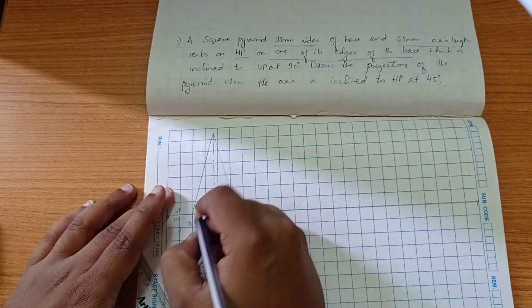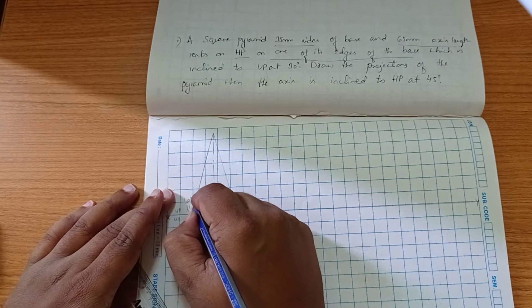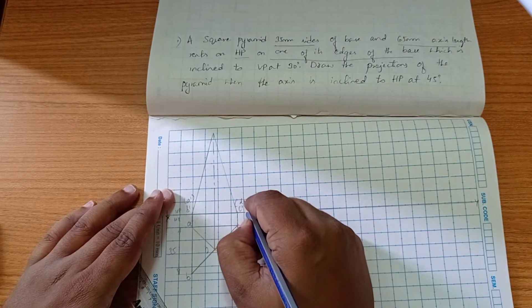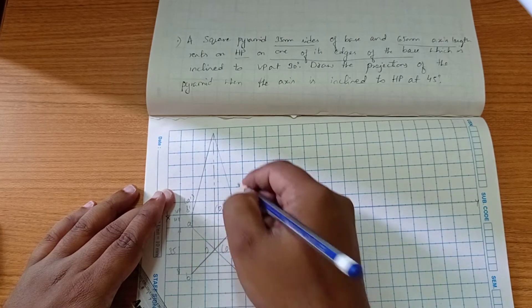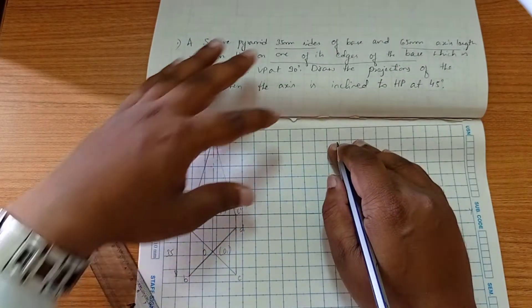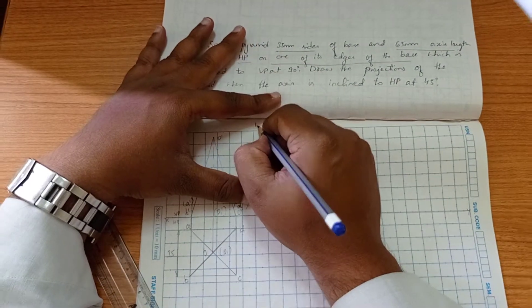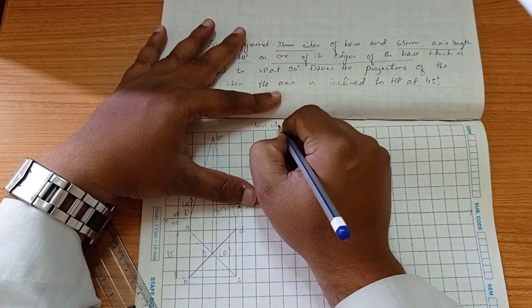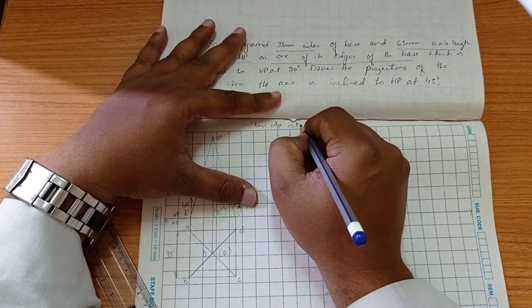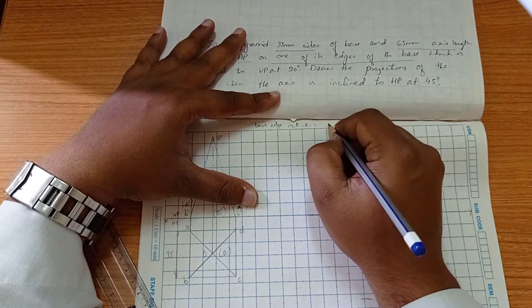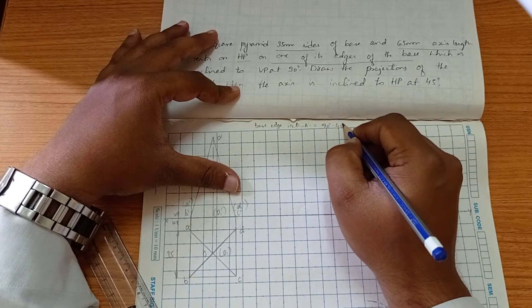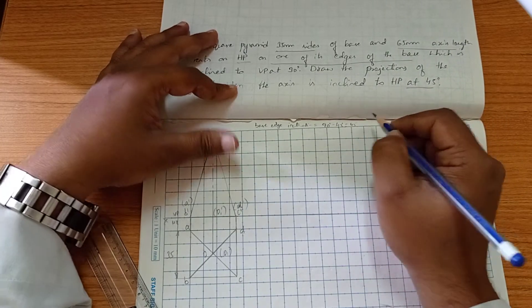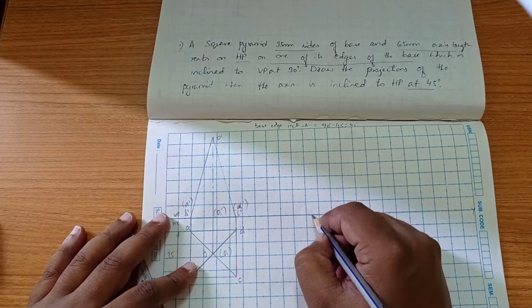Here V dash is visible, C dash visible, D dash not visible, 1 dash in black, and O dash. We'll take the base edge inclination which is 90 minus the angle of inclination to HP, that's 45 degrees.